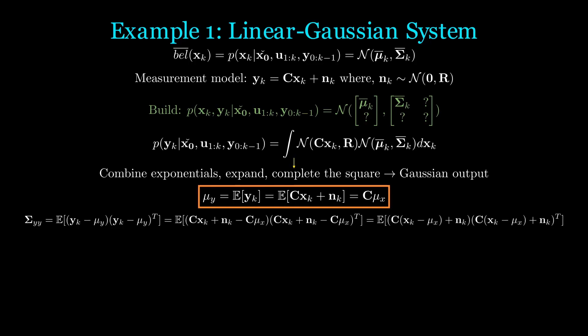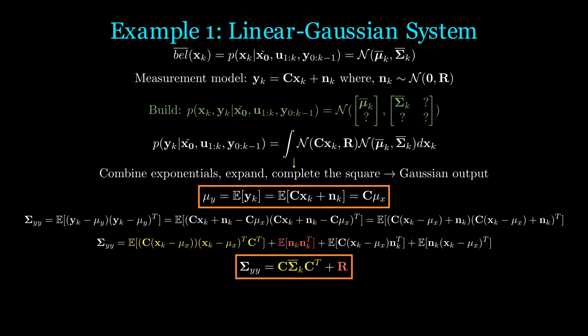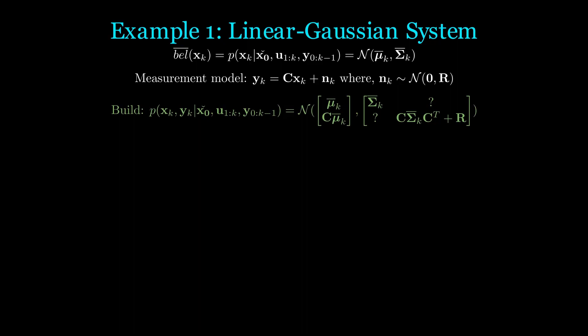plug in the appropriate terms, and then group terms. Now we can simply expand all the terms, and because we assumed n_k, the noise is independent of everything else, the latter two expectations go to zero. So we are left with CΣ̄_kC^T + R. Let's add this to our joint distribution.